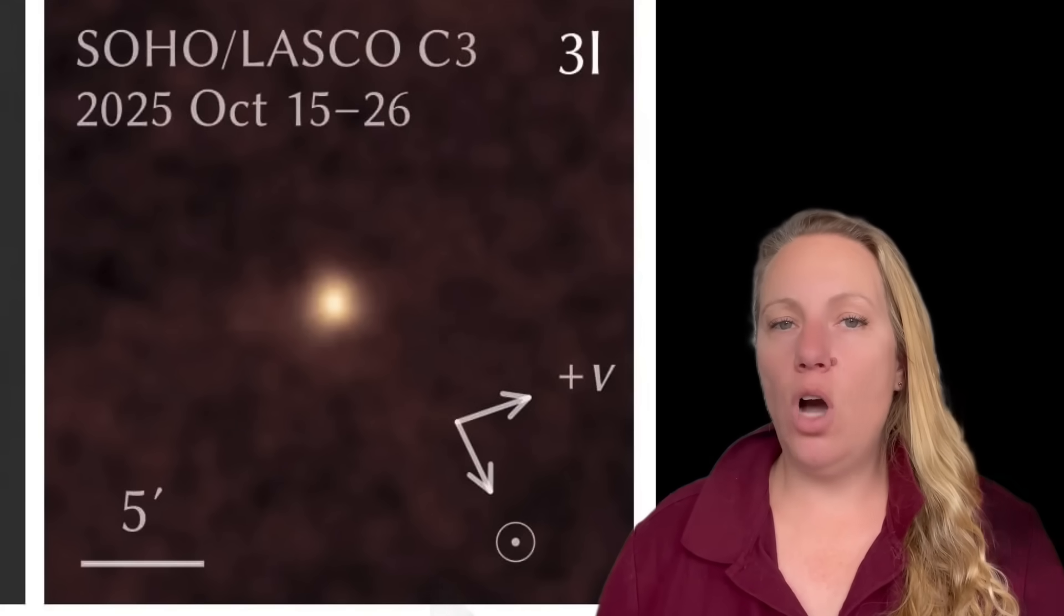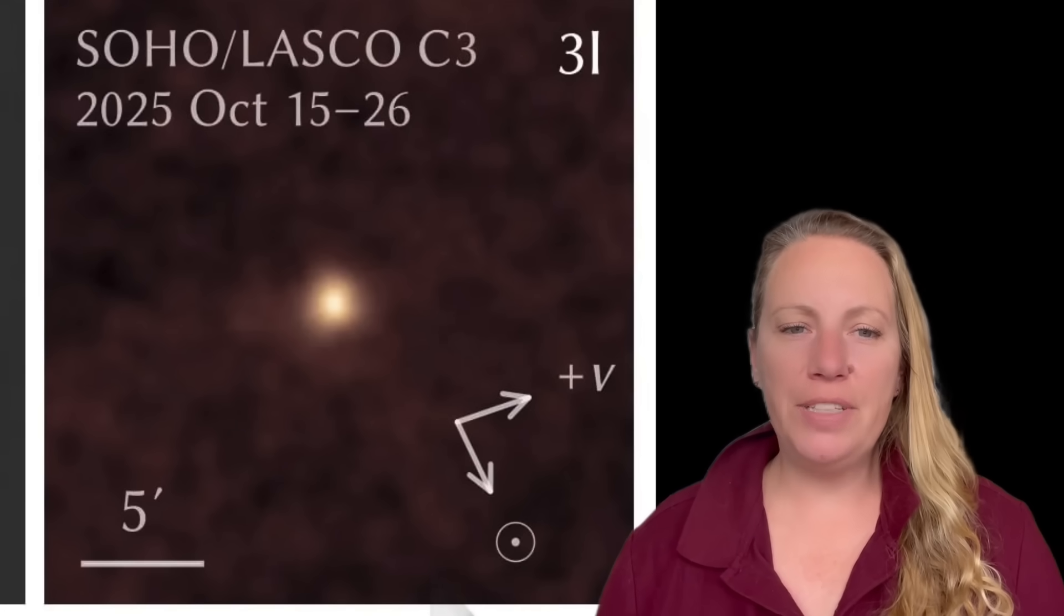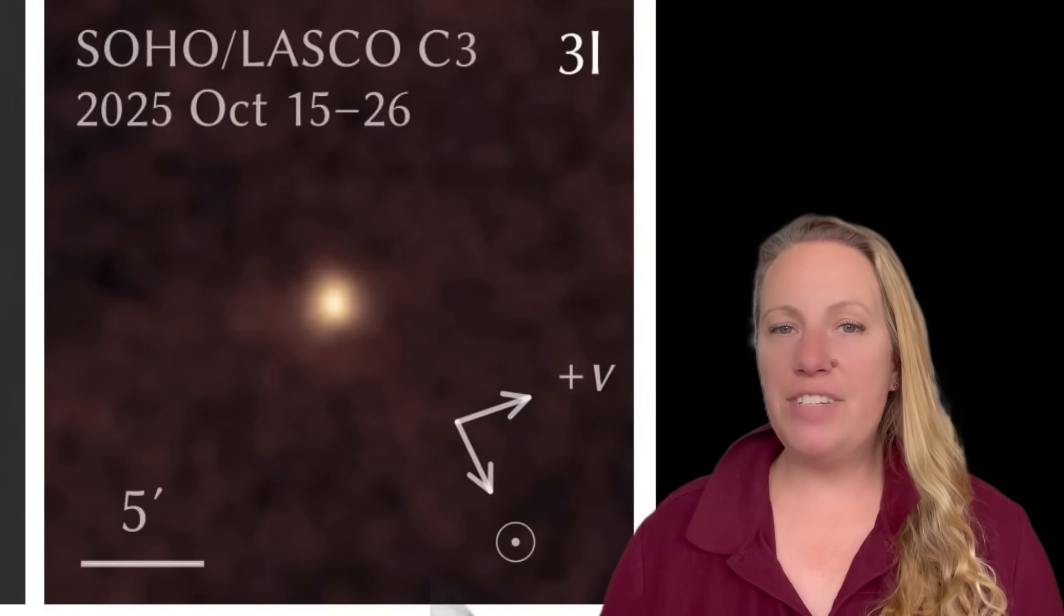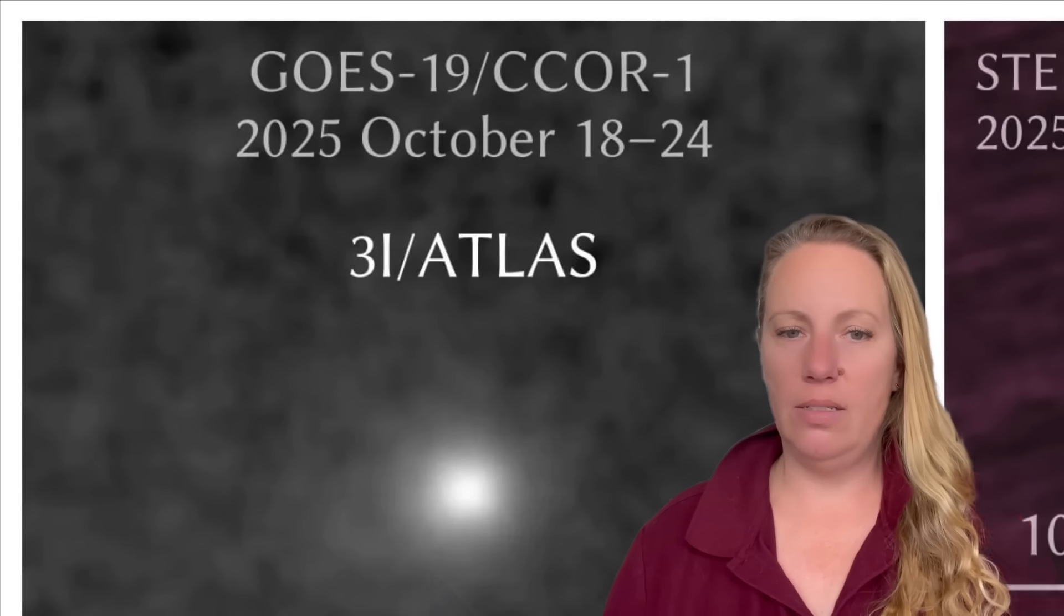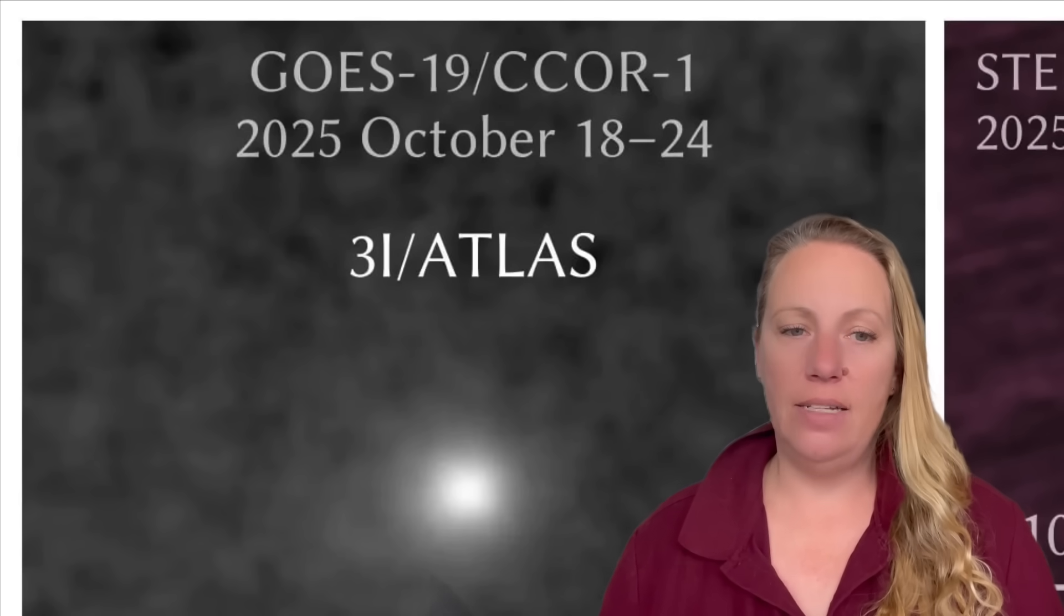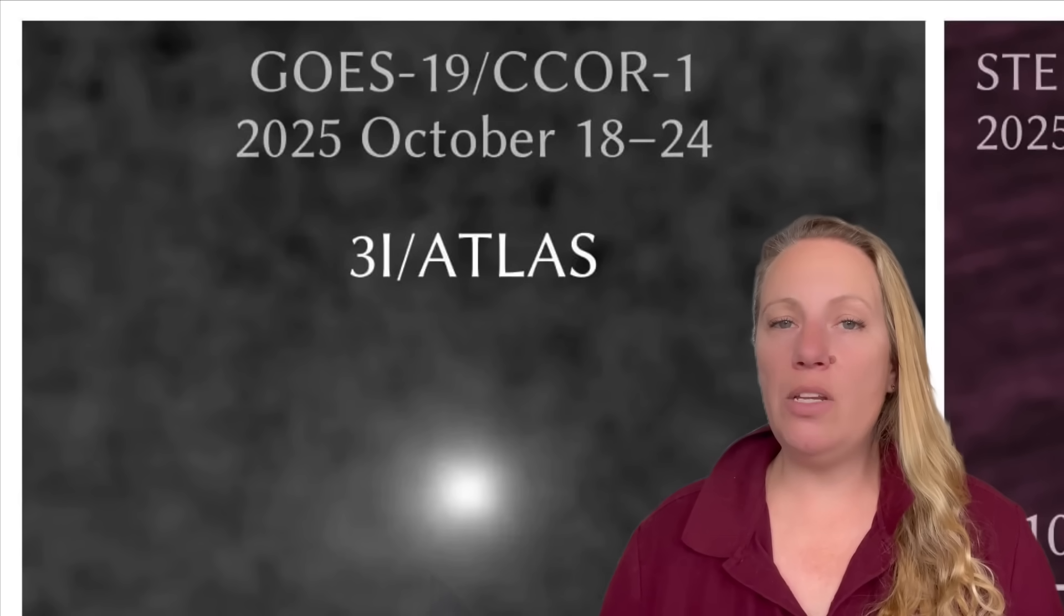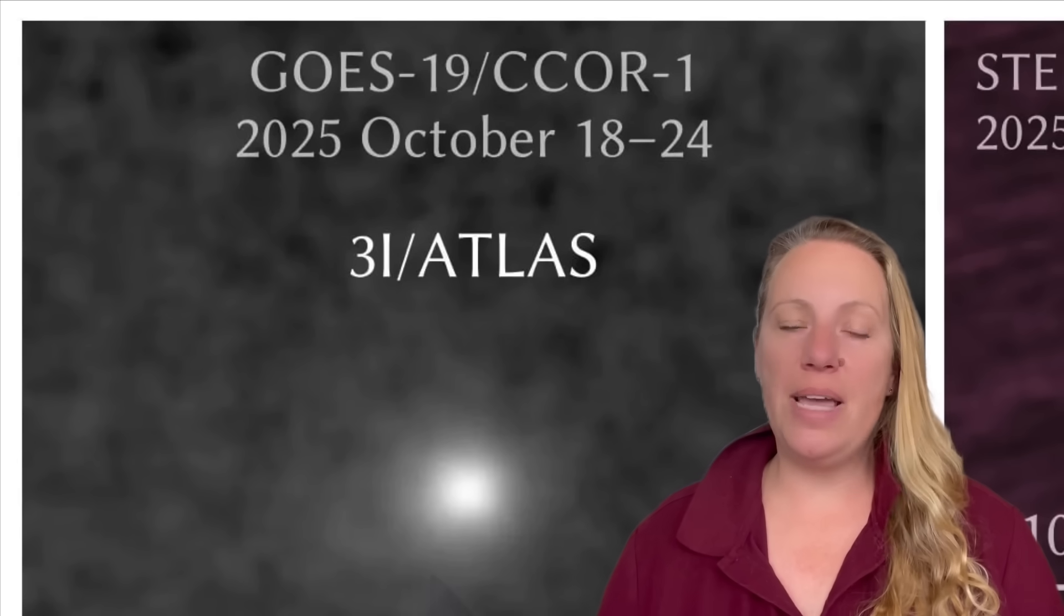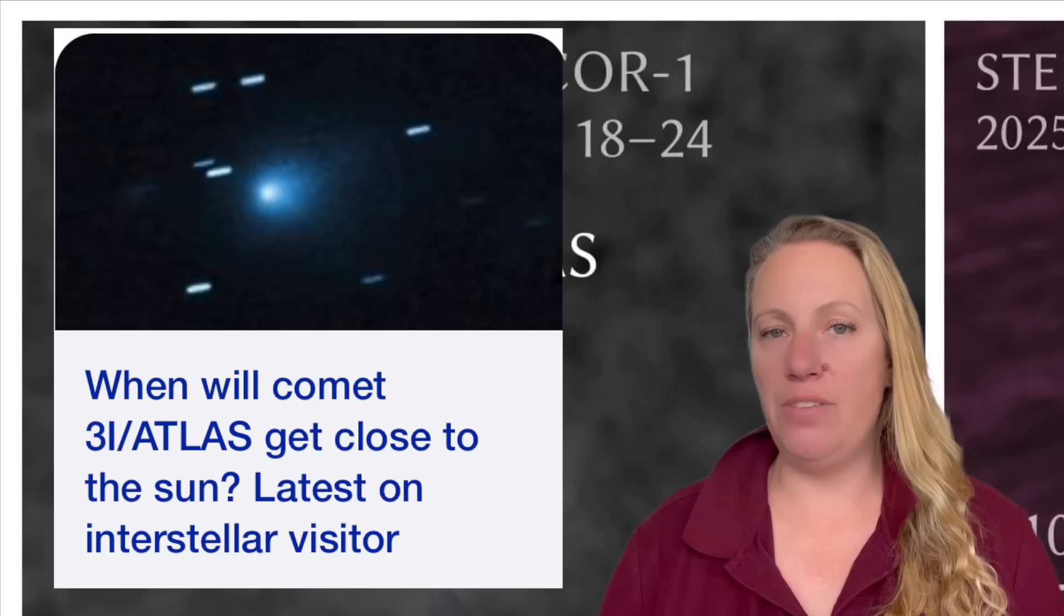And it's active at large distances where other comets would be relatively inert. We have dust and gas behavior that looks odd. Some reports also say that it had an anti-tail, or dust streaming towards the sun rather than away from the sun, which is very unusual.